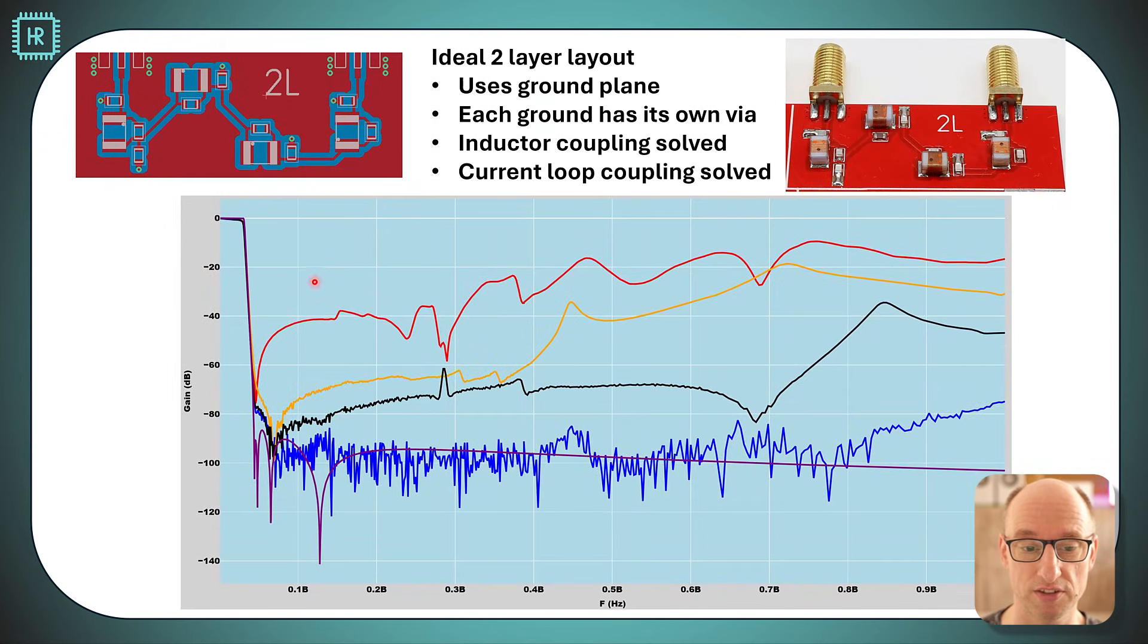Now let's have a look what that does. We are getting the black characteristic and the biggest change is above 400 megahertz. We see it's much better there and especially at the higher frequencies it works much better.